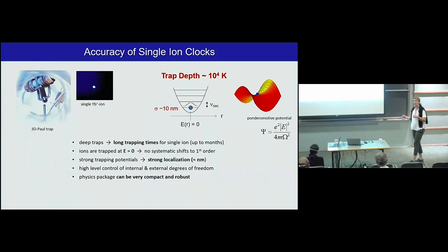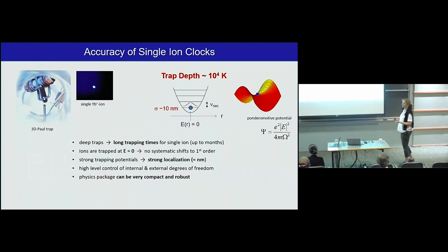That gives us a very high duty cycle and we don't, at the moment, worry about the Dick effect, the aliasing. I think these physics packages, we will make them very compact and very robust, because the ions are trapped in such a deep lattice, so I really want to bring it out on a mountain. It's a head-to-head race, as we have seen also in Jun's talk. 10 to minus 18, that's the magic number.